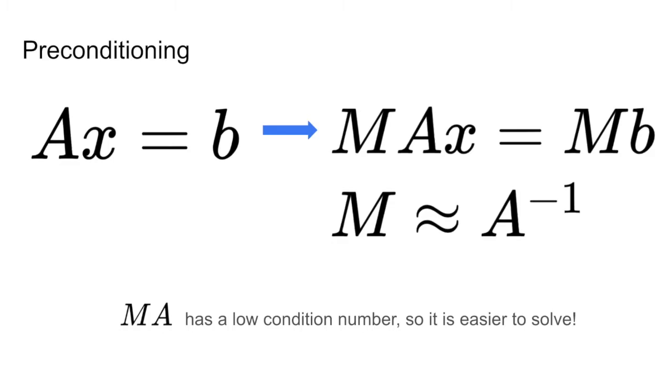In our example, we want to take Ax equals b, where the matrix A has a high condition number, and transform it by multiplying a matrix M to solve MAx equals MB, such that the matrix MA has a low condition number. This basically happens when the matrix MA is approximately the identity matrix, and we can achieve this by defining the matrix M to be approximately the inverse of A.